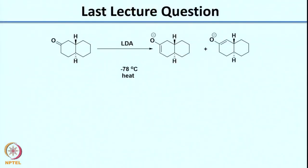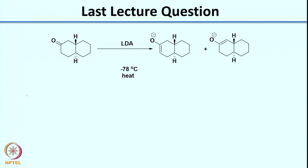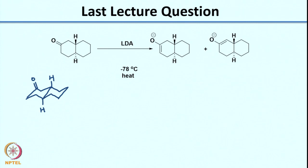I had left you with a question in the previous class: given a particular ketone with two possible enolates, which one is the kinetically favored enolate? I had asked you to look at the conformation of this ketone. If I write the three-dimensional structure in the most stable conformation, since this molecule is what is known as a transdecaline, I can write the structure with two chair forms and the two hydrogens - one above and one below - trans to each other. The ketone is at the 3-position with respect to the ring junction.